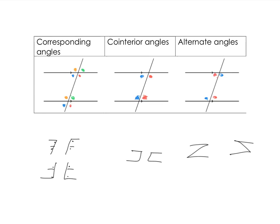Let's check that you got them all. Let's focus on our corresponding angles first. The red ones are corresponding because here is the F — they just tuck underneath in the F. Then we have the blue ones, which is the back-to-front F. Now we do our F upside down and we get our green ones. And then upside down and back to front gives us our orange ones. So there are four pairs of corresponding angles, and those are equal to each other.